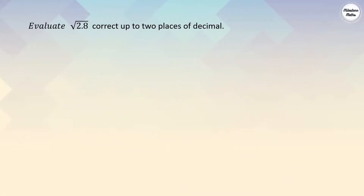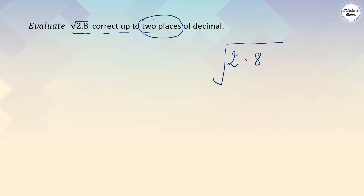Now let's take another example: find the square root of 2.8 correct to two decimal places. Two decimal places means we need to find the square root to three decimal places, then round up or down. First step: put a bar on 2 for the whole number part. For the decimal part we need a pair, so we add 0 — since 2.8 and 2.80 are equivalent — and put the bar above 80.